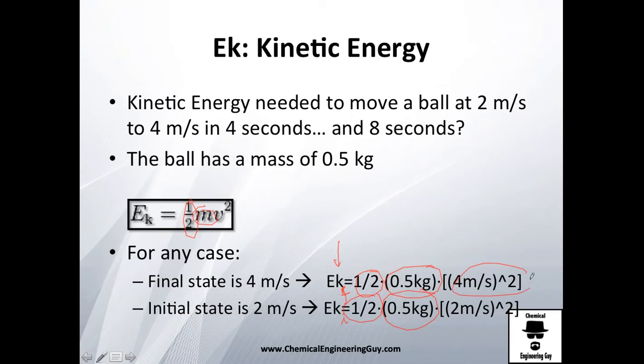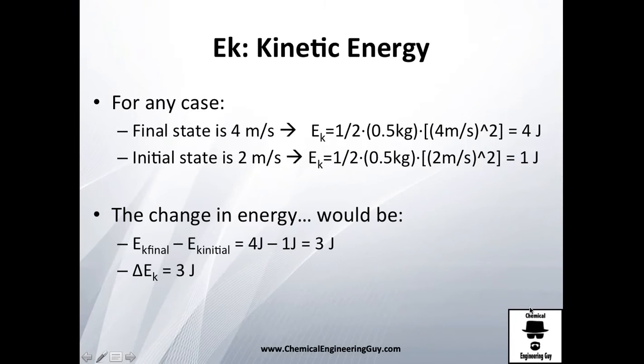And the velocity to the square will be here 4 squared is 16, and this will be 4. Let me check that out. The final state, calculating this, I got four joules, and the first state I got one joule.